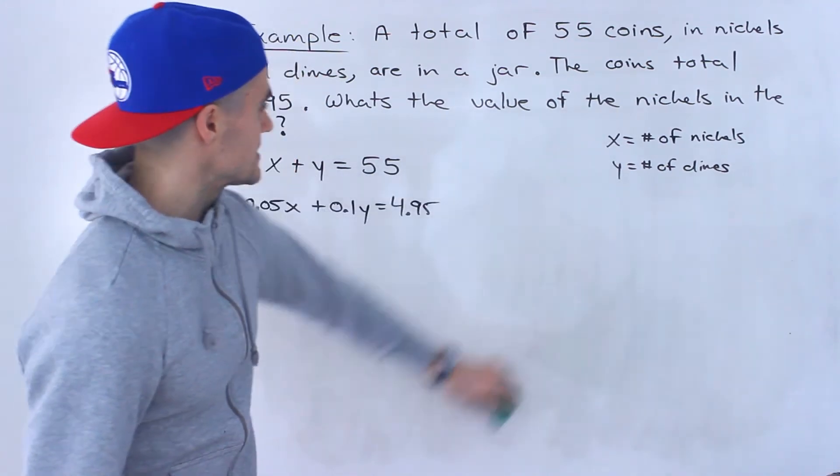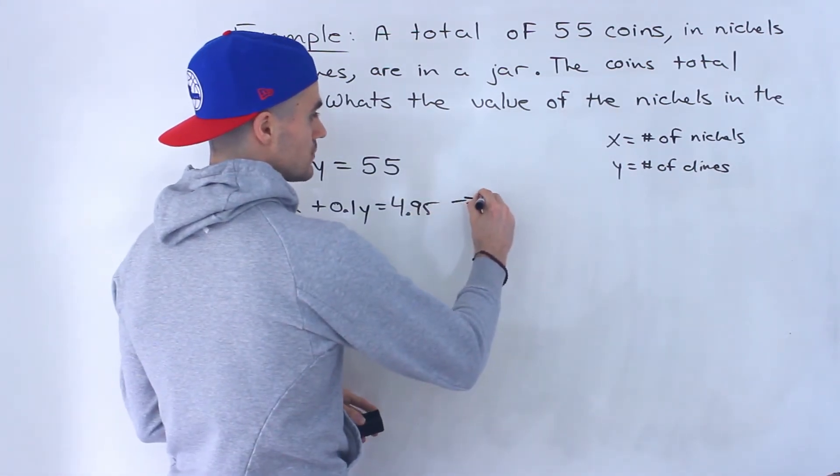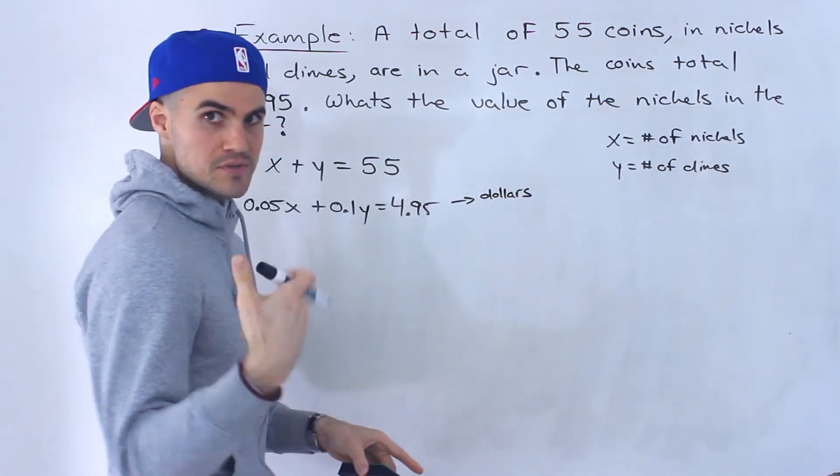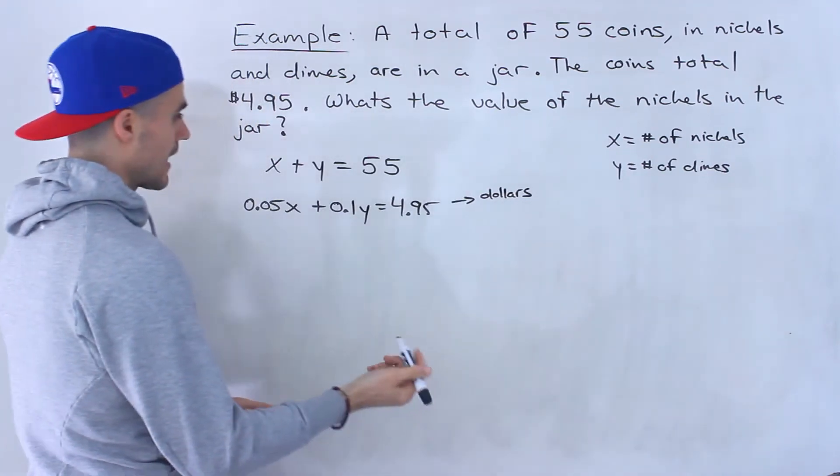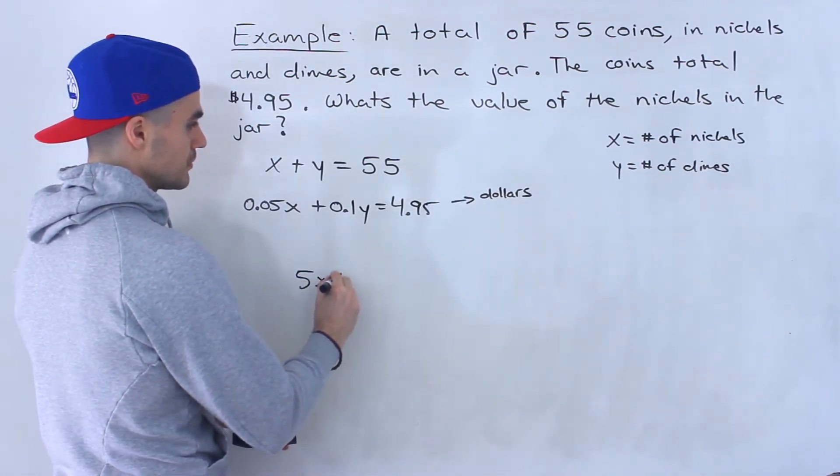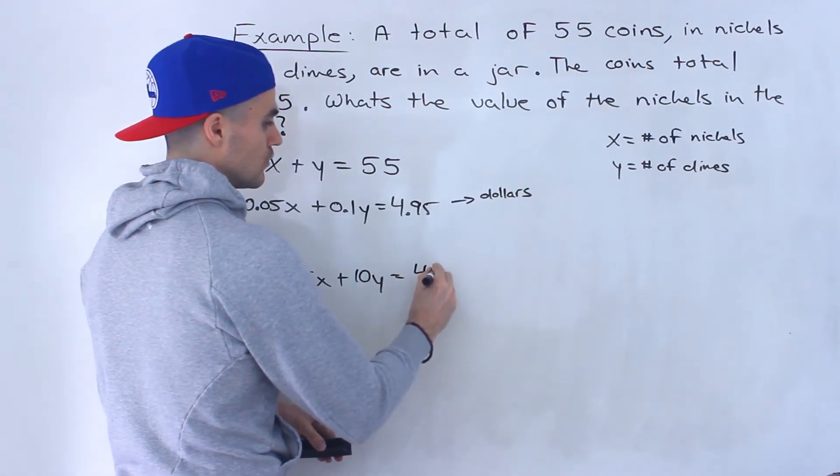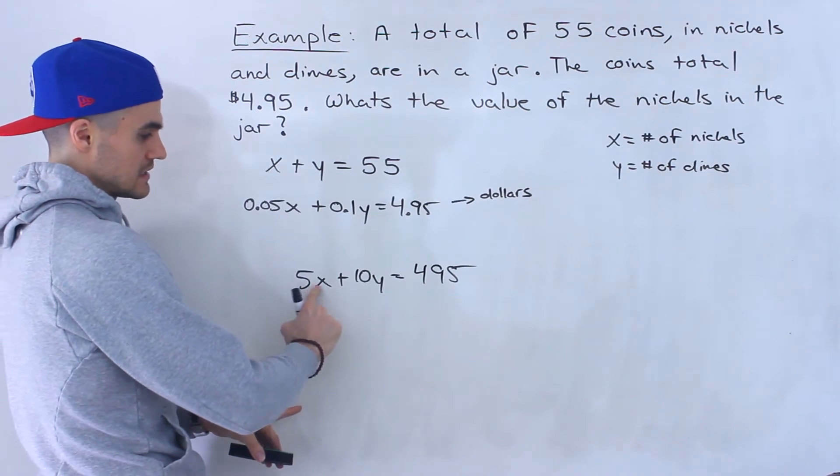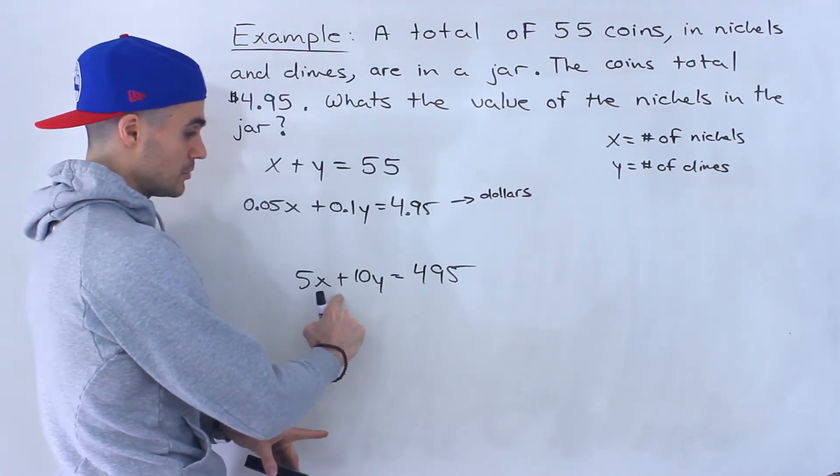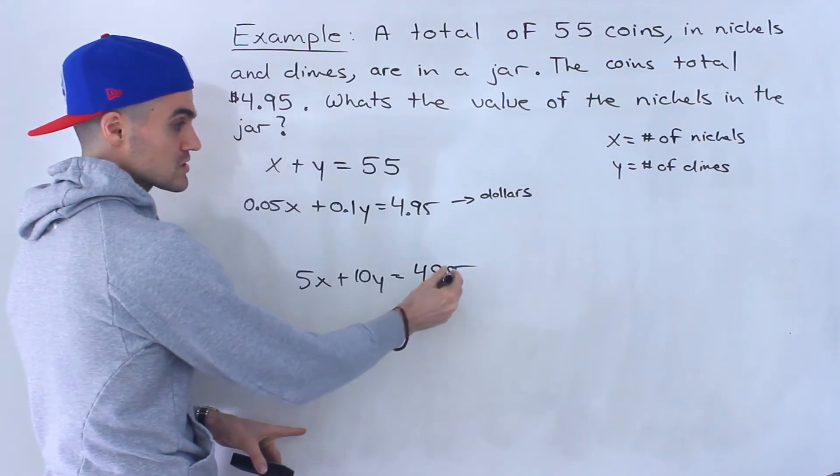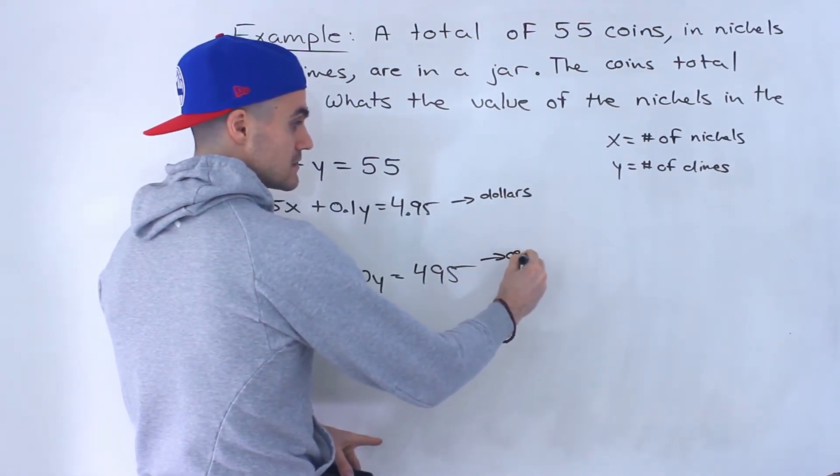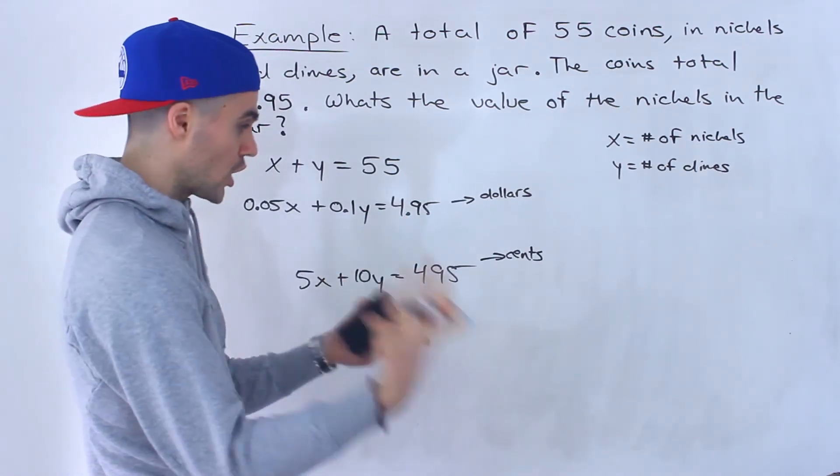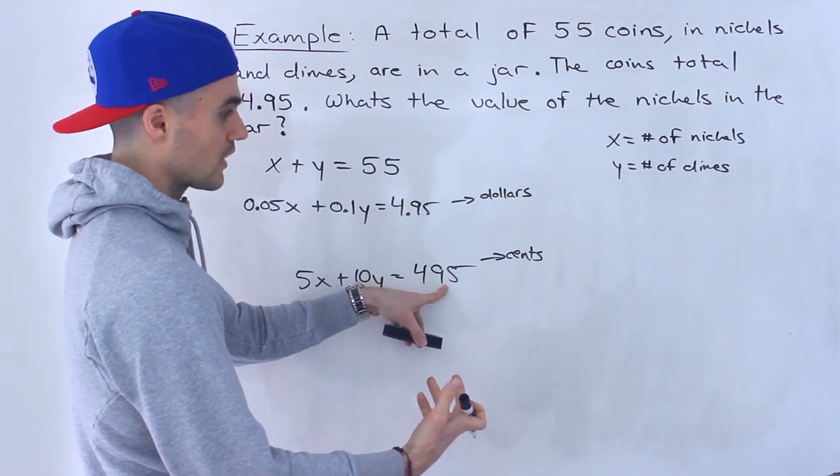Now this equation that I have here, it's in terms of dollars. But you can also make an equation in terms of cents. So if we did that, if we made it in terms of cents, then it would be 5x plus 10y equals 495. Does that make sense? 5 cents times the number of nickels plus 10 cents times the number of dimes equals 495 cents, which is like $4.95. Because $4 has 400 cents plus the 95 would give us 495.